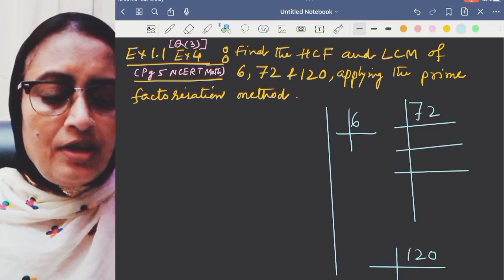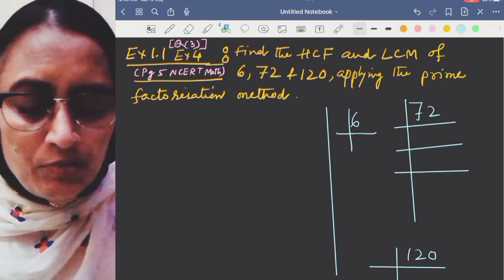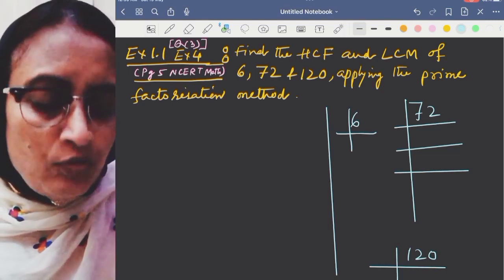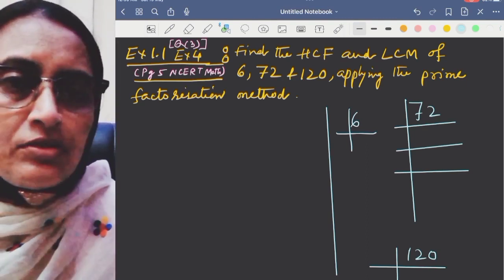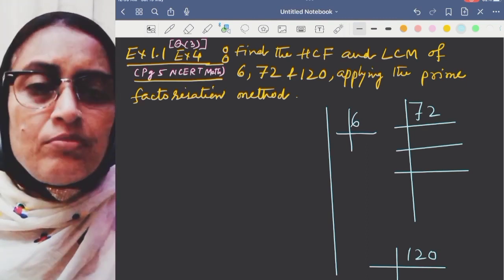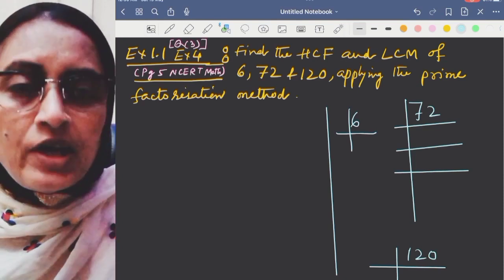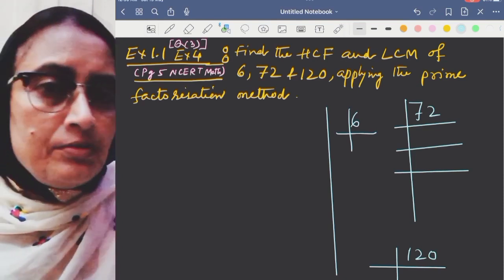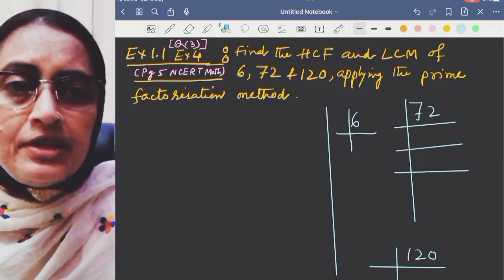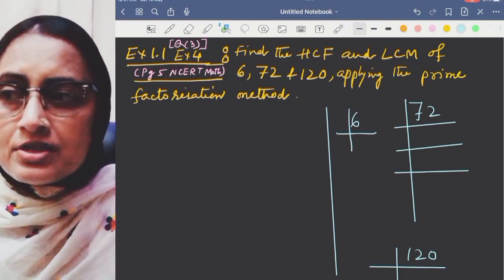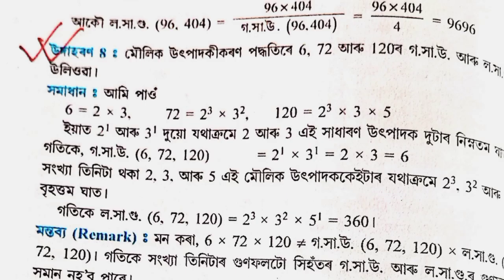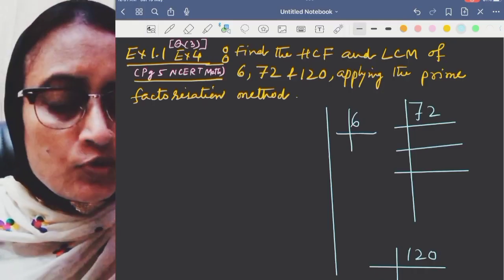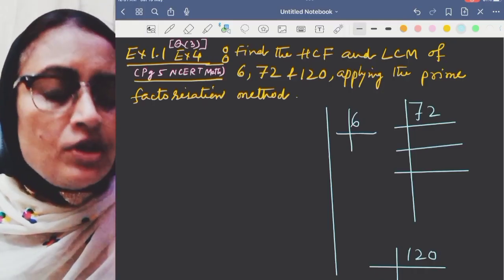The next question is: find the HCF and LCM of 6, 72, and 120 using the prime factorization method. This sum has been repeatedly asked in exams in the last few years. I will now solve it step by step, starting with the prime factorization of each number.